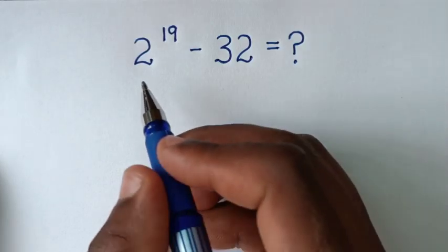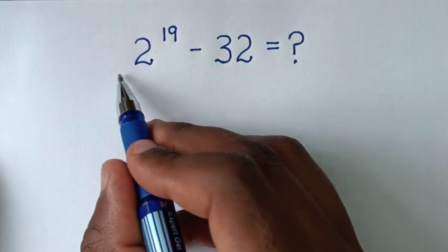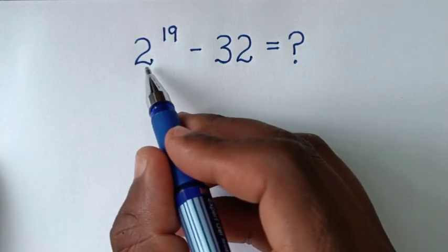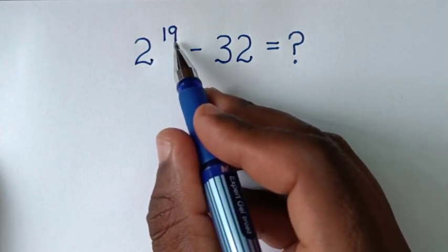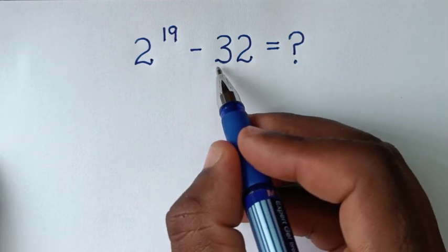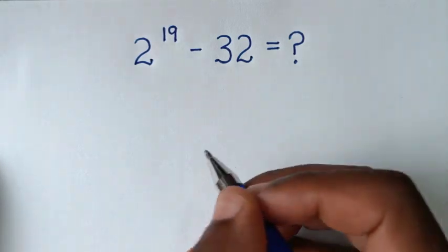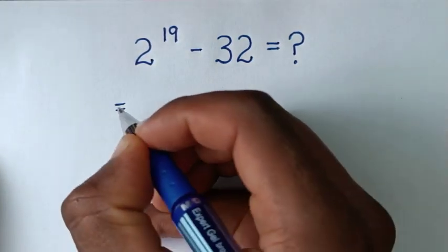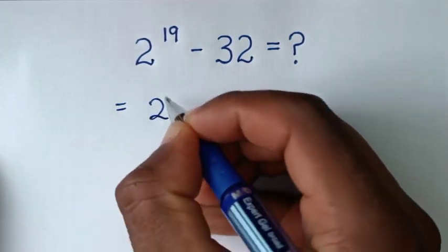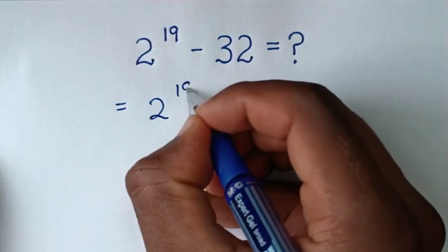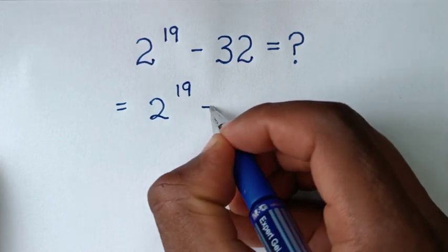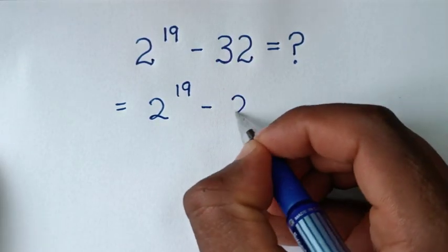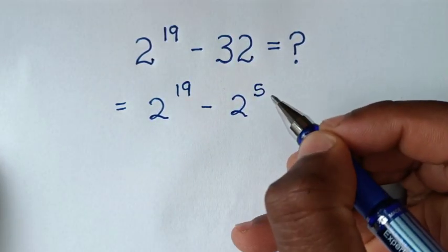Hello, you are welcome to solve this math problem which is 2 power of 19 minus 32. So it will be equal to 2 power of 19 minus 32, which is the same as 2 power of 5.